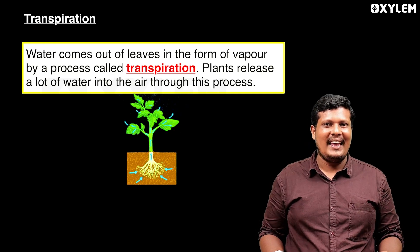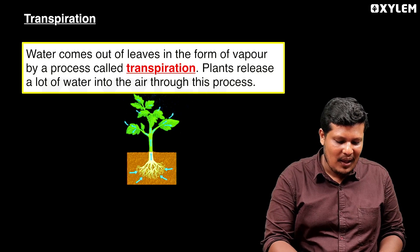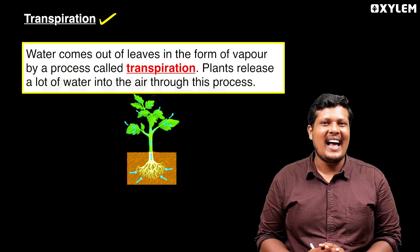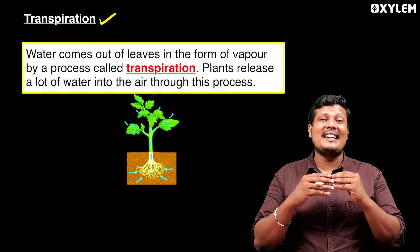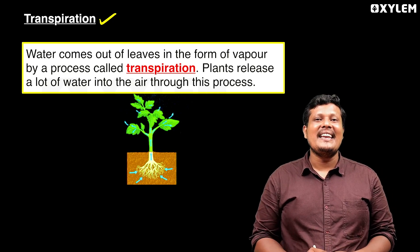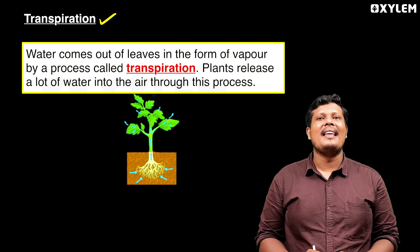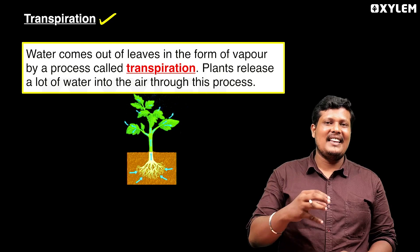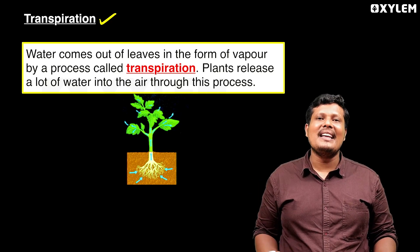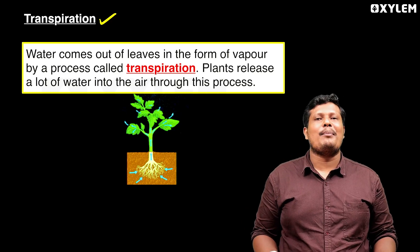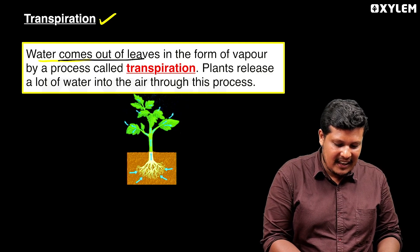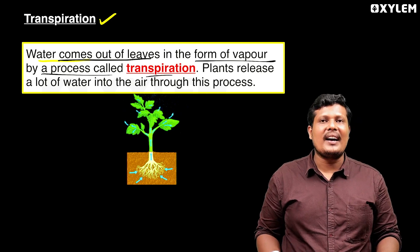One thing is transpiration. The transformation — transpiration — we call it water vapor. Water comes out of the leaf in the form of vapor, and this process is called transpiration.